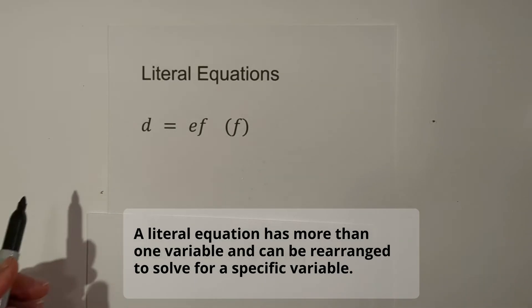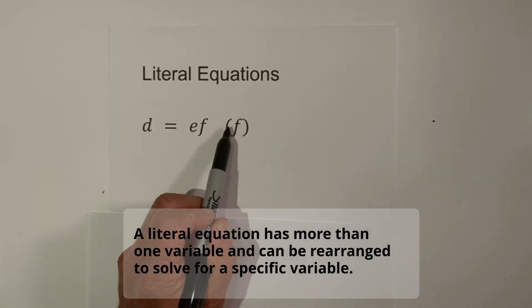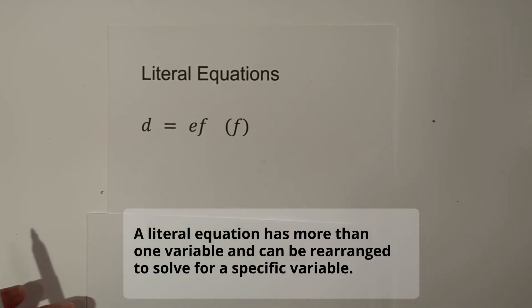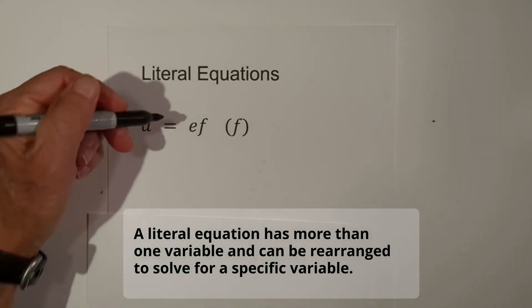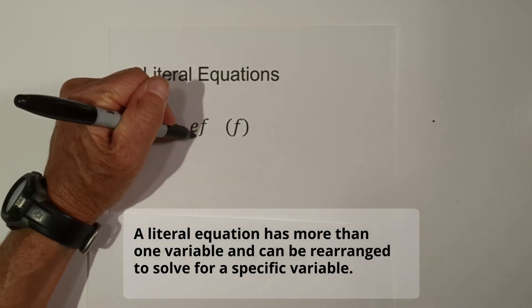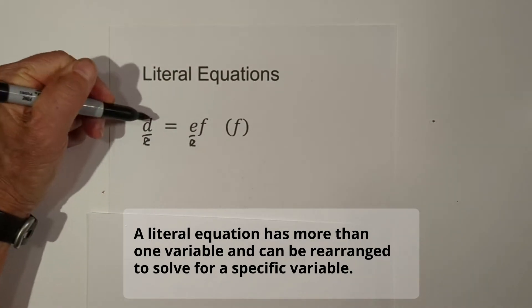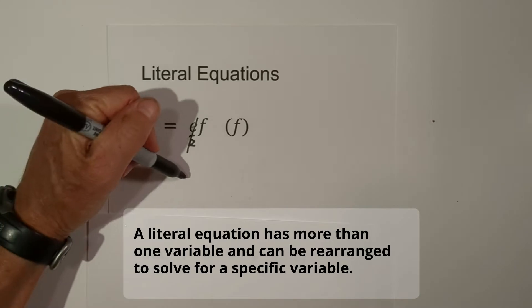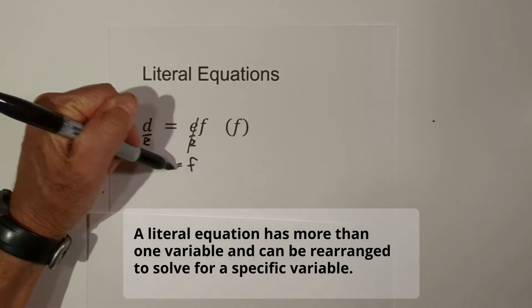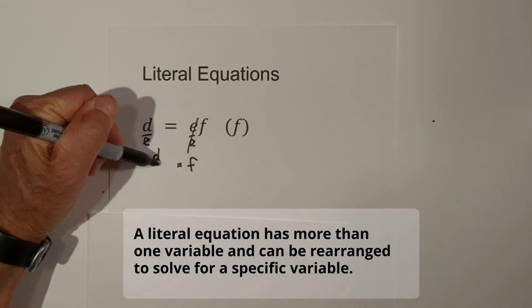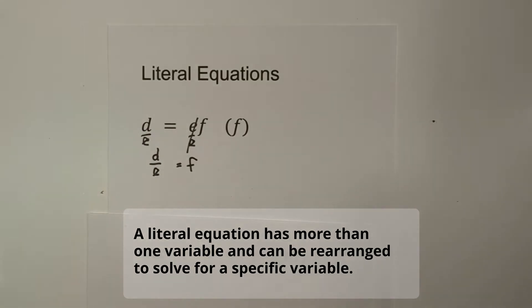So let's go ahead and do this. What we're solving for is in the parentheses. So we need to get F by itself. What we're going to begin with is we can divide through with E. The E's cancel, so we're left with F equals D over E. There's the first one.